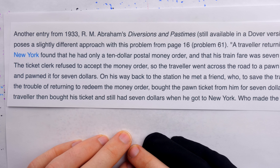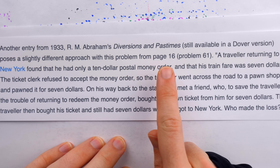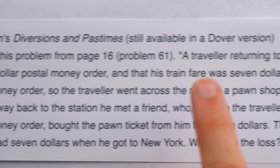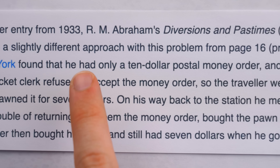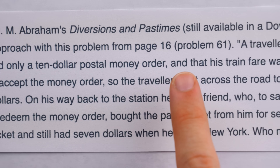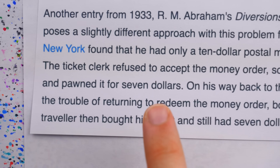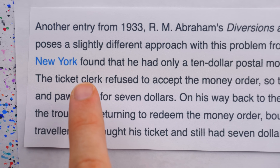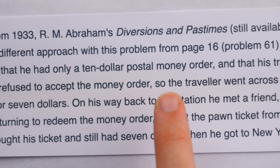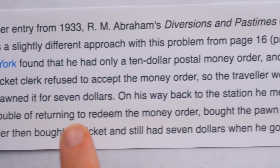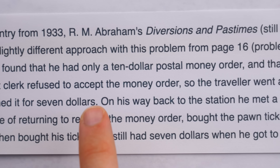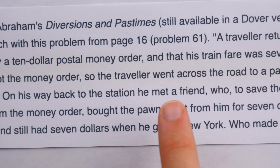Let's read the first one here from Abraham's Diversions and Pastimes. A traveler returning to New York found that he had only a $10 postal money order, and that his train fare was $7. The ticket clerk refused to accept the money order, so the traveler went across the road to a pawn shop and pawned it for $7.